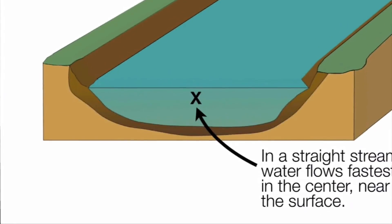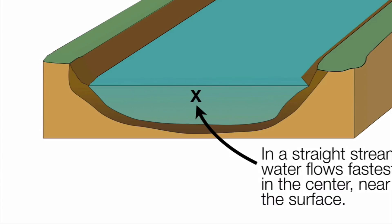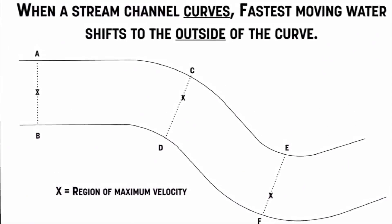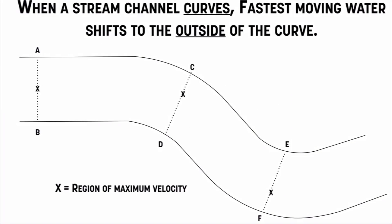In a straight stream, the water is flowing the fastest in the center, close to the surface. The problem is streams don't really flow straight for very long — there always seems to be a curve or a bend. When a stream channel curves, the faster moving water shifts to the outside. In the straight part of the channel the water is fastest down the middle, but once there's a curve, the faster moving water is forced to the outside of that curve.